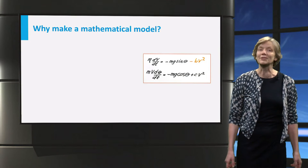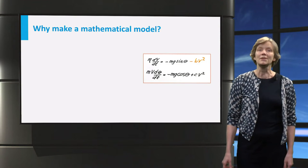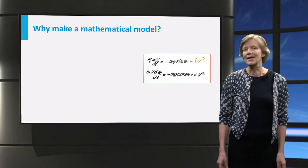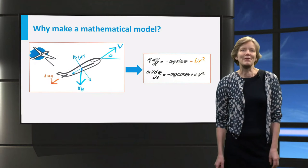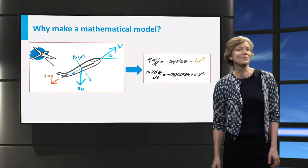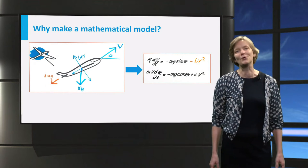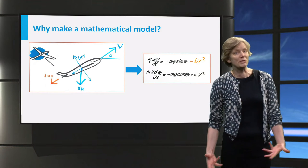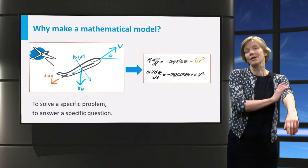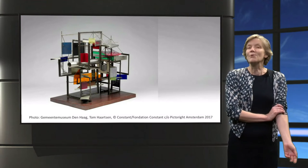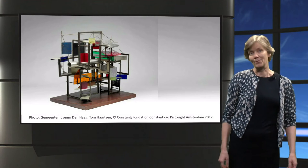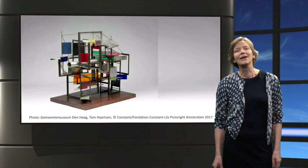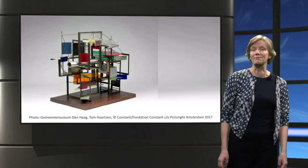Now before making a mathematical model, first think about why you would do that. Of course you can make a model to play with, or to display its beauty. Engineers and scientists, however, build mathematical models to solve a specific problem — for example, the question of how to control the flight of a glider. When you construct a model without a specific problem, you might end up with a beautiful model that was a lot of work and is useless — a work of art, but not answering a specific question.